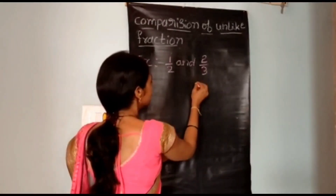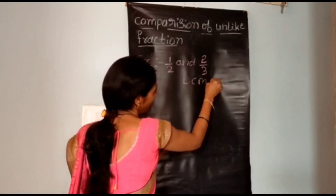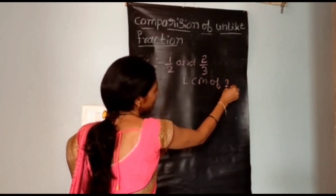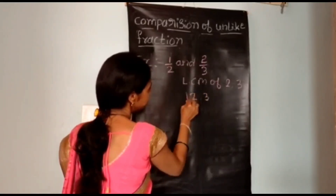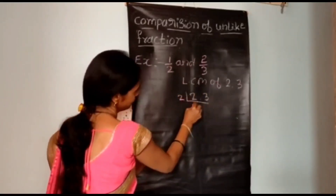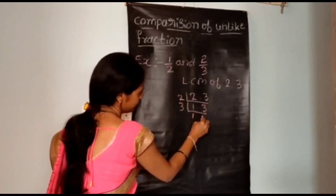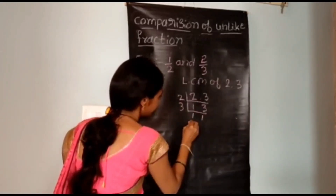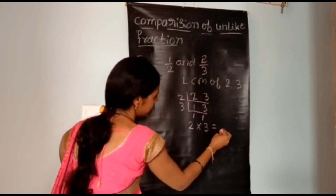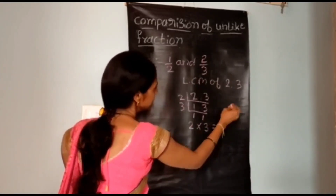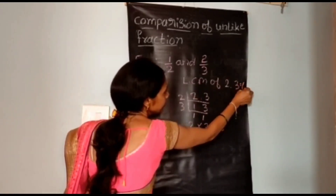First, we take the LCM of 2 and 3. We multiply 2 into 3 to get the LCM of 2 and 3, which gives us 6. So the LCM of 2 and 3 is 6.